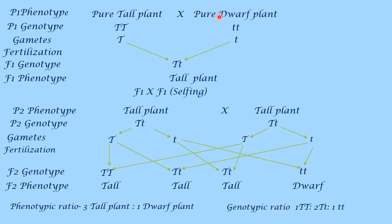We are crossing this tall plant with the dwarf plant. In F1, only one out of two characters is expressed. The character which is expressed in F1 is called the dominant character, and the character which is not expressed in F1 is called the recessive character. So here, the tall character is dominant and dwarf character is recessive. When we cross this tall plant with itself, there is no dwarf character visible, but that dwarf character reappears in the second generation. So in F1 generation, that character is suppressed and not allowed to express, but is again expressed in F2.